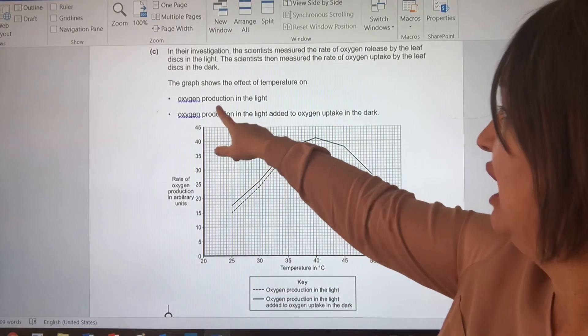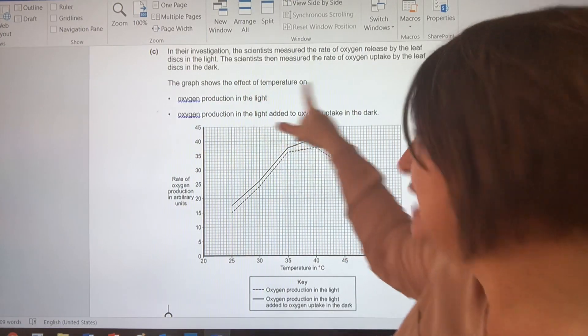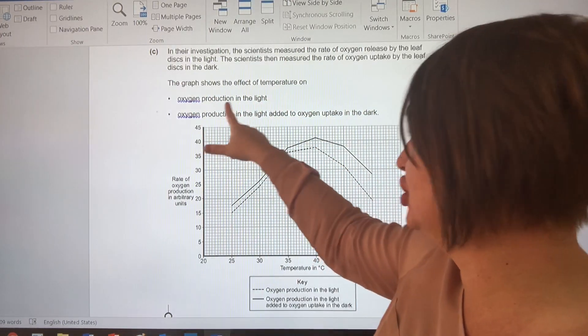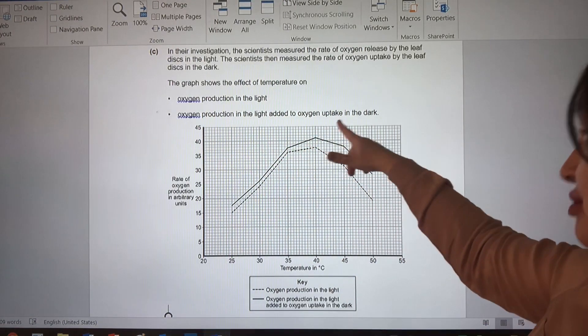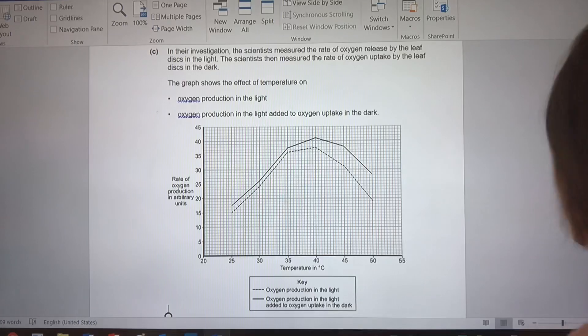Okay, so the graph shows the effect of temperature on oxygen production in the light and oxygen production in the light added to oxygen uptake in the dark. Okay, so let's have a look.